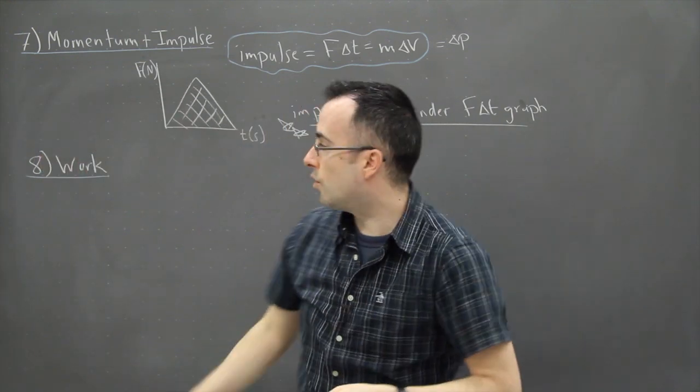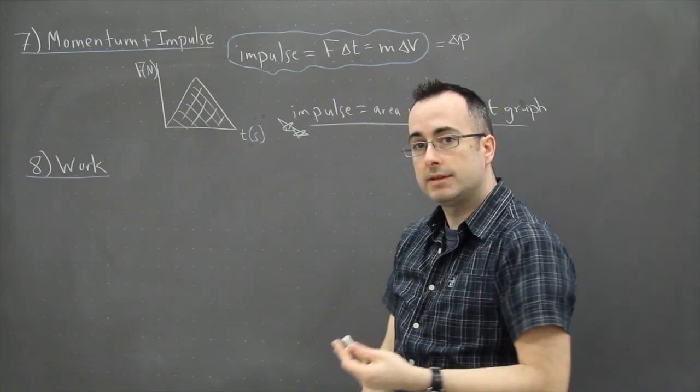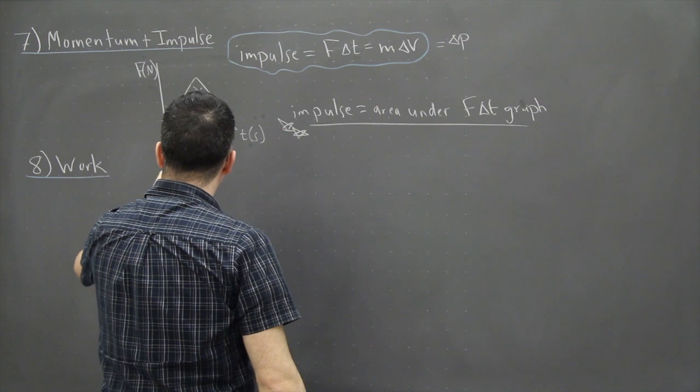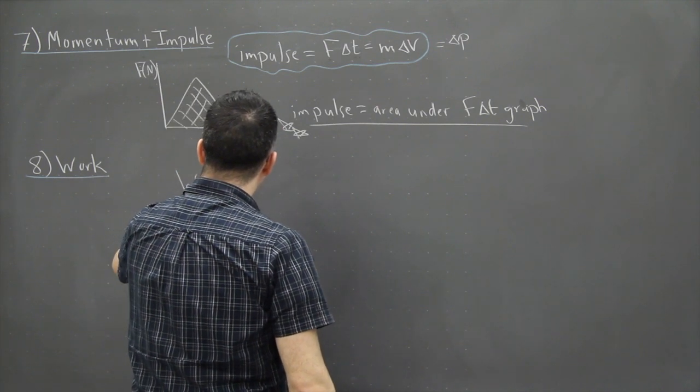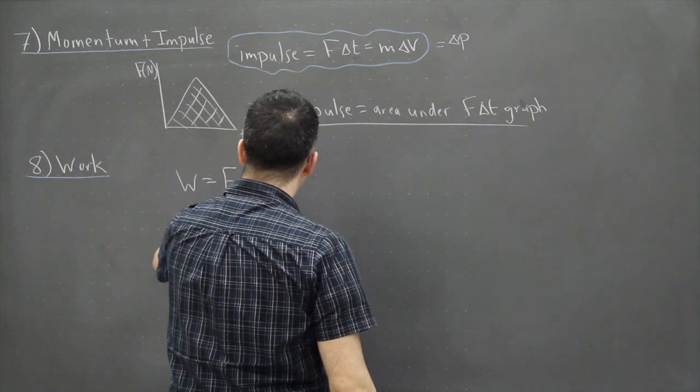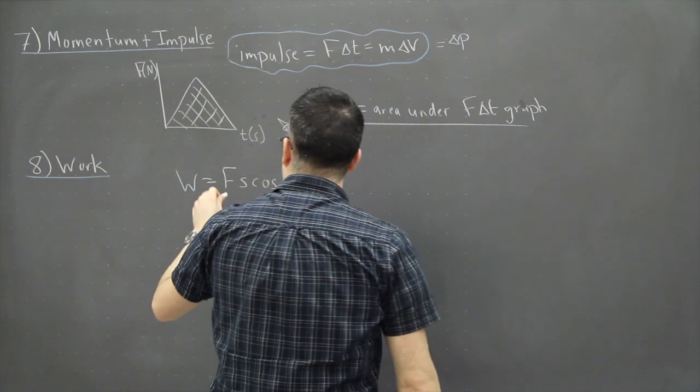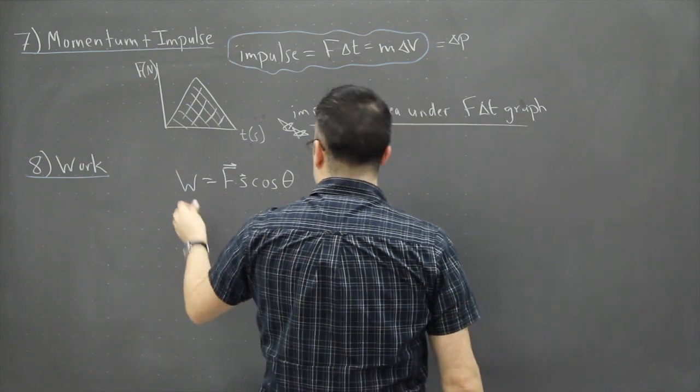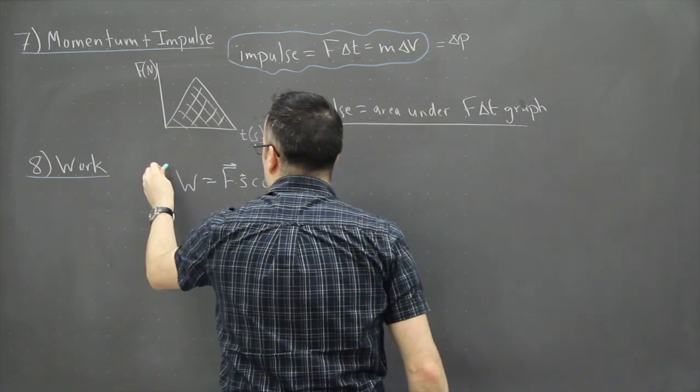The next thing I want to talk about is work. Work is given by this equation here: W equals F S cos theta. It's actually more complicated than that, but we normally just write it like this. So this is the equation for work.